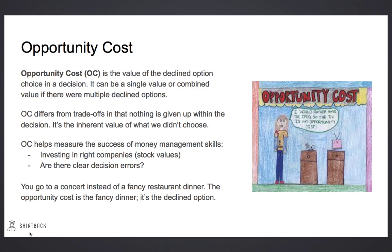Opportunity costs differ from trade-offs — there's nothing given up within the decision. It's just the inherent value of what we didn't choose. Opportunity cost helps to measure the success of money management skills: are you investing in the right companies, and are there any clear decision errors? An example would be if you go to a concert instead of a fancy restaurant dinner. You go to the concert but decline the dinner — the opportunity cost is the fancy dinner; it's the declined option.